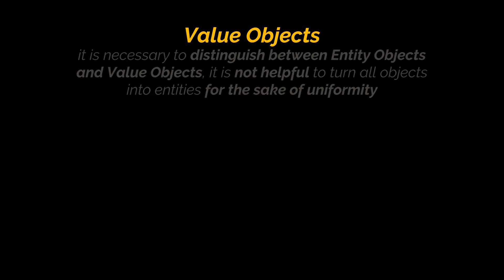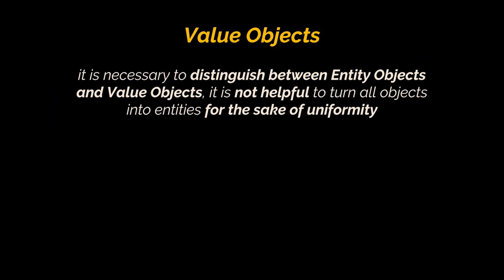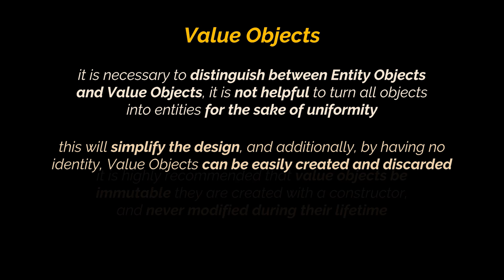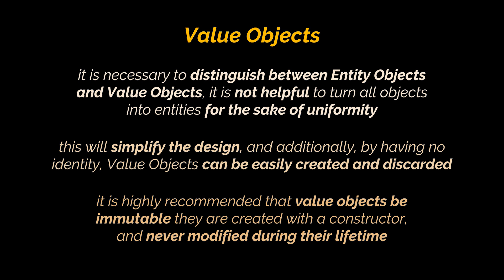We are not interested in which object it is, but what attributes it has. Objects that are used to describe certain aspects of a domain and do not have identity are named value objects. It is necessary to distinguish between entity objects and value objects — it is not helpful to turn all objects into entities for the sake of uniformity. By having no identity, value objects can be easily created and discarded. It is highly recommended that value objects be immutable — created with a constructor and never modified during their lifetime. They should be kept thin and simple.